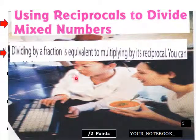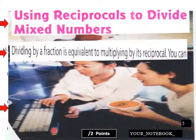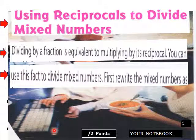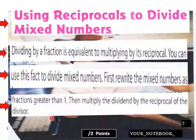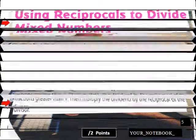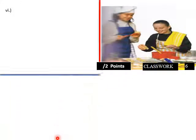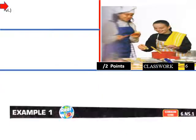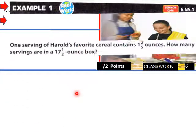Using reciprocals to divide mixed numbers: dividing by a fraction is equivalent to multiplying by its reciprocal. To divide mixed numbers, first rewrite the mixed number as a fraction greater than one, then multiply the dividend by the reciprocal of the divisor. Let's do a couple of examples.